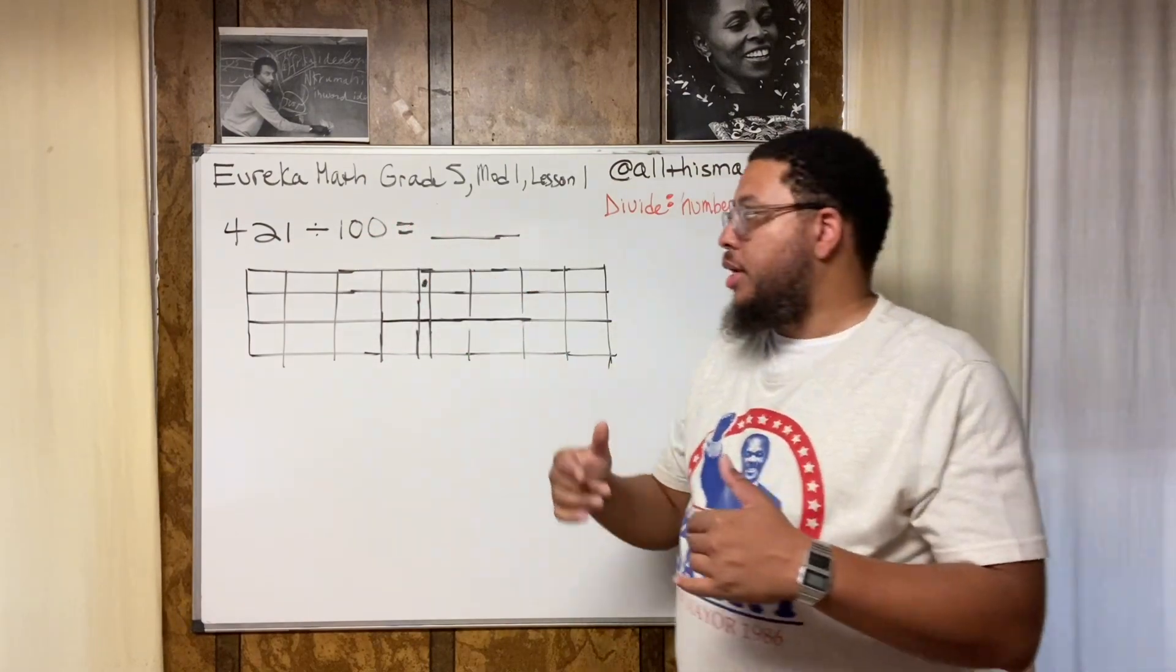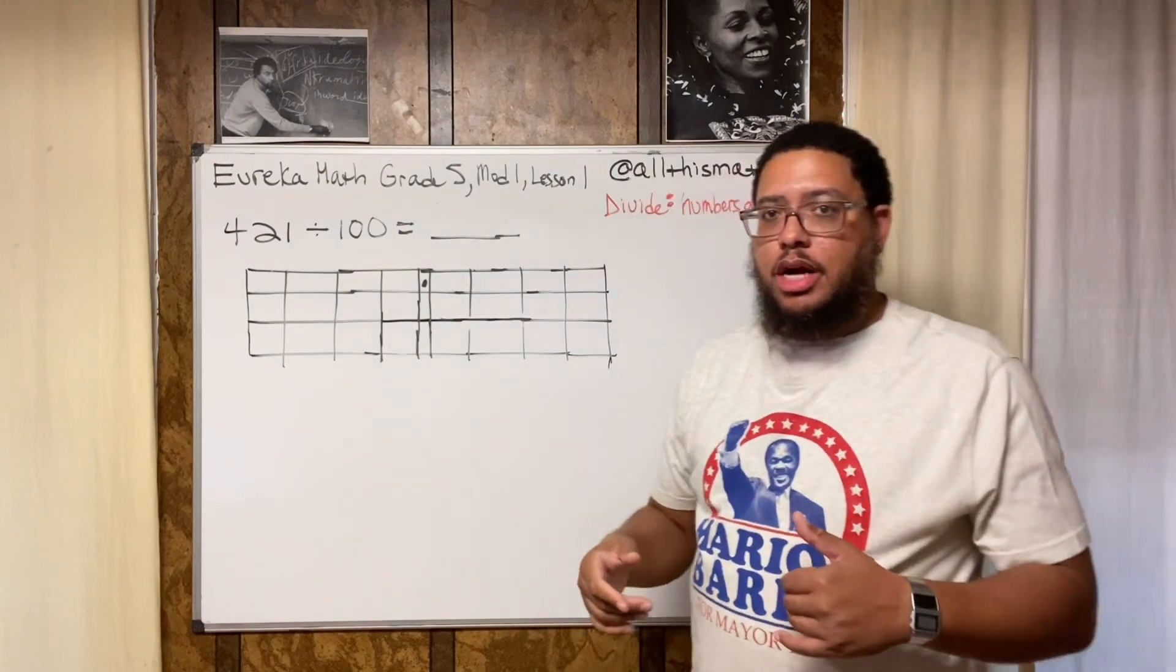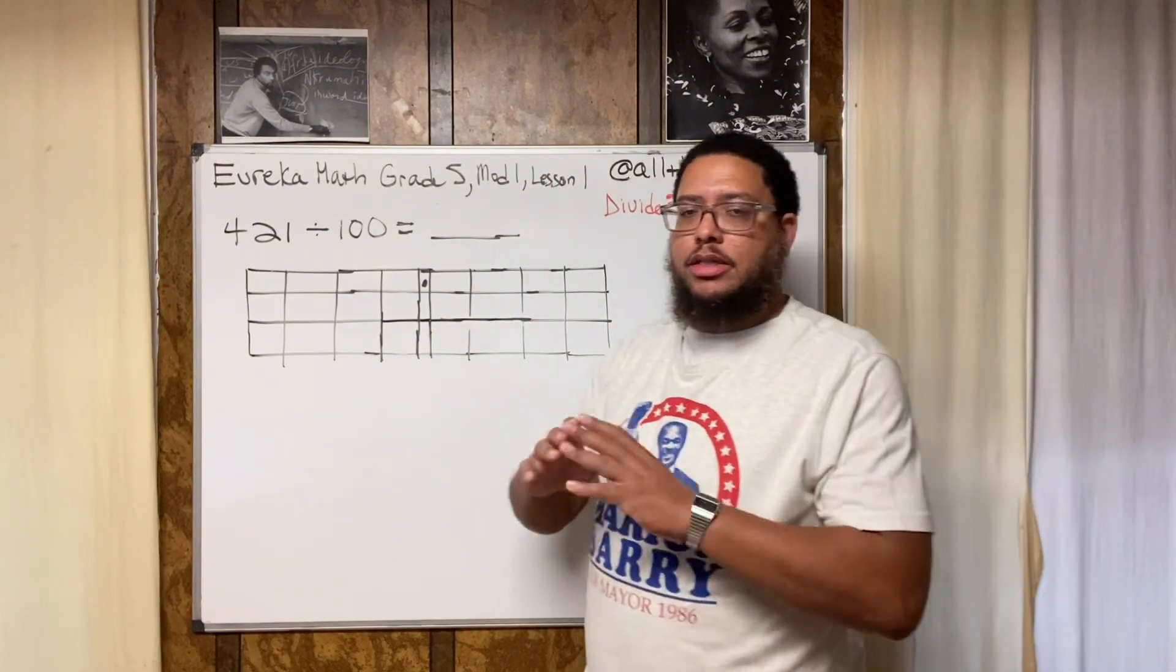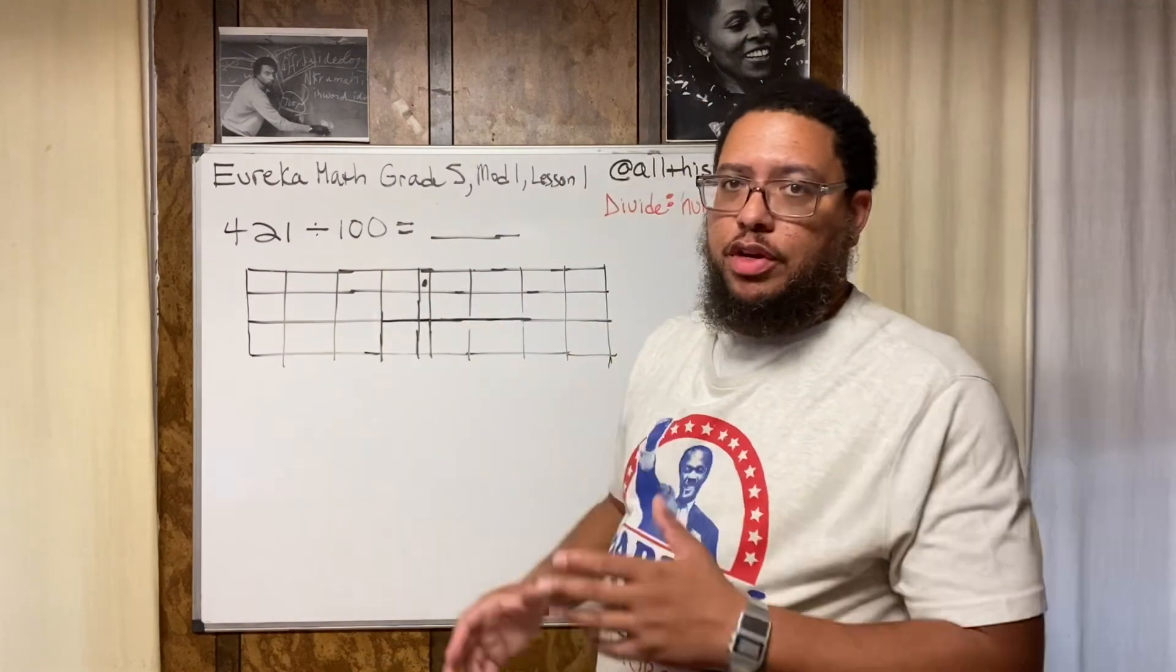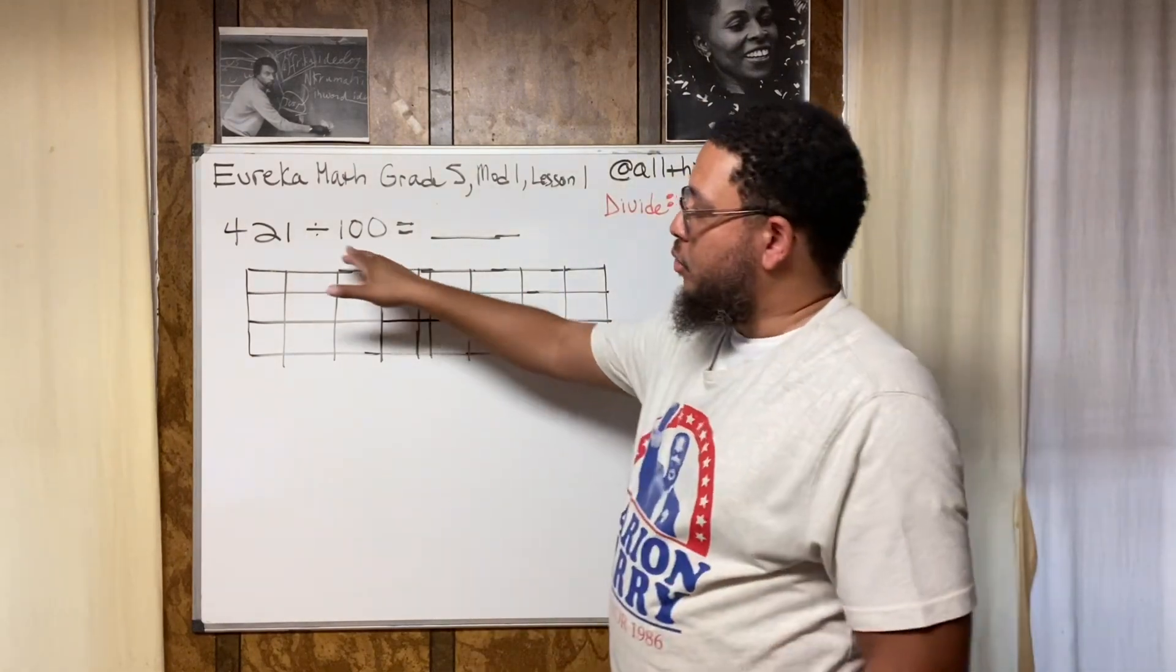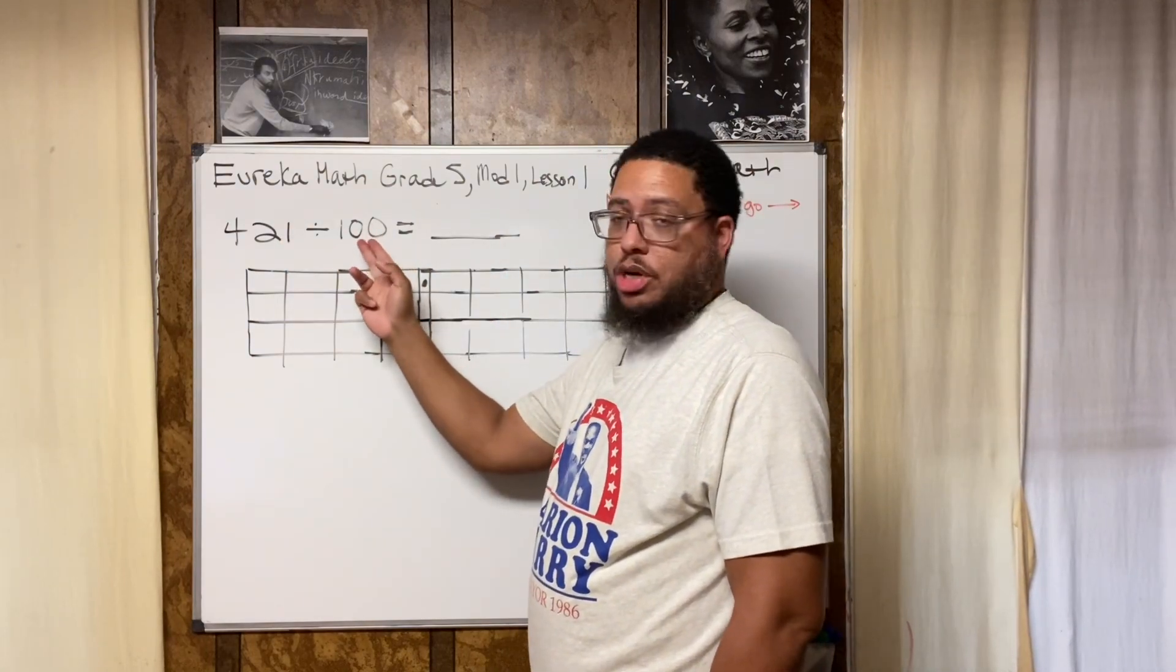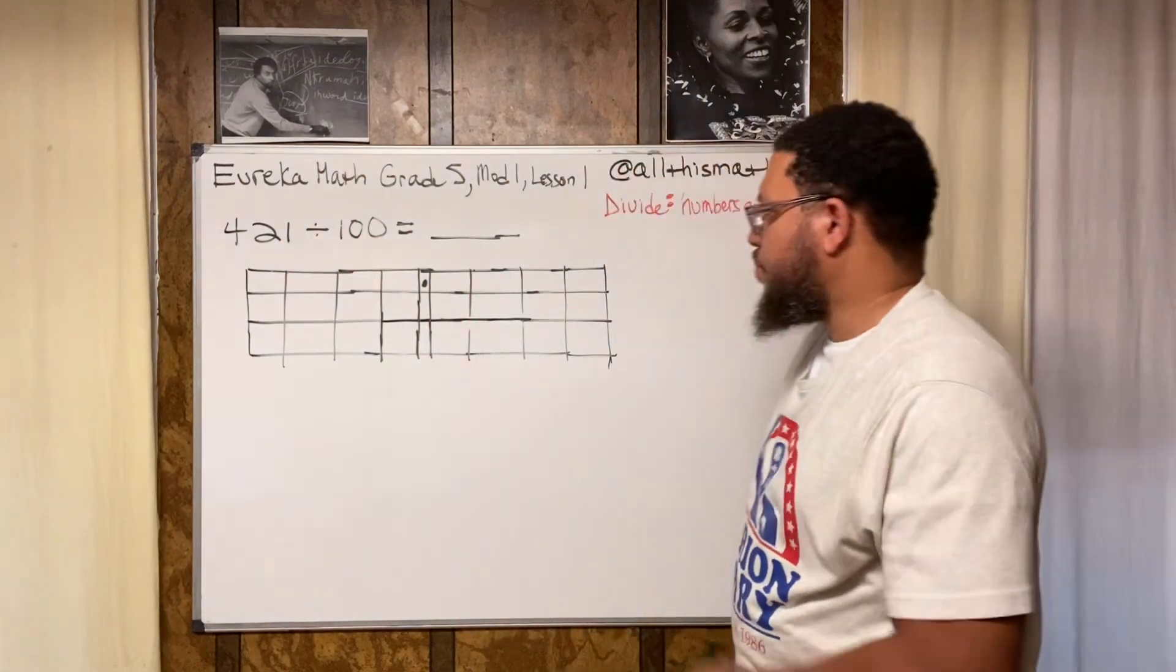That's if we're dealing with a whole number. 100 is a whole number. If it was 100th it would be a different situation, that's a little more complicated, that's the subject of a different video. But for now we're dealing with the whole number 100, we're moving two spaces because we got two zeros, to the right.